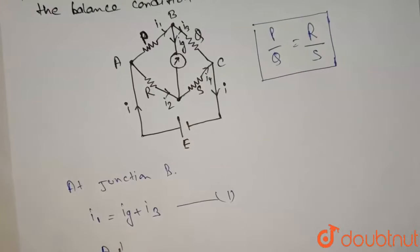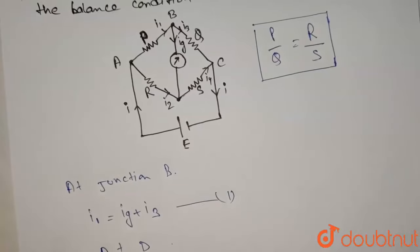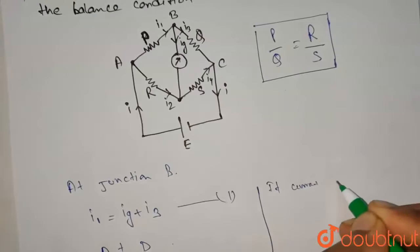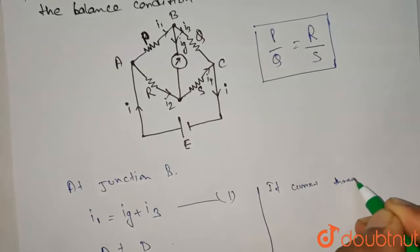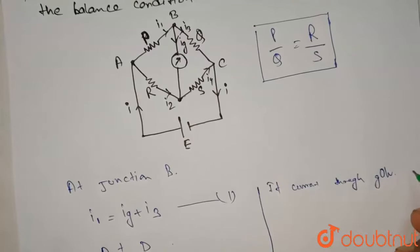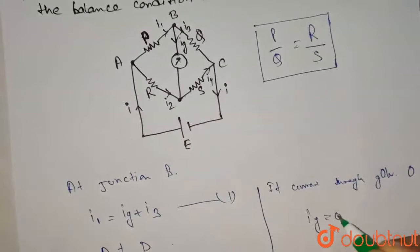At junction D, use Kirchhoff's current law. The equation would be I2 plus IG equals I4. Now if current through galvanometer is 0, when IG equals 0.